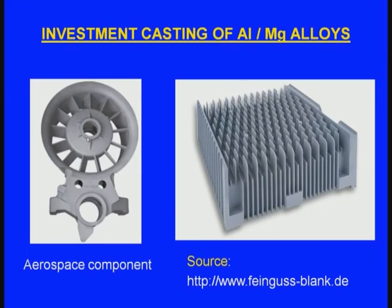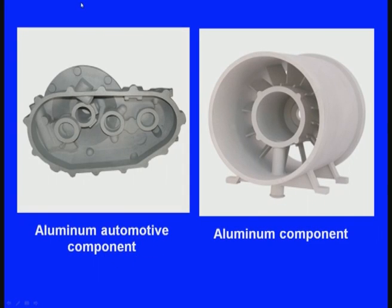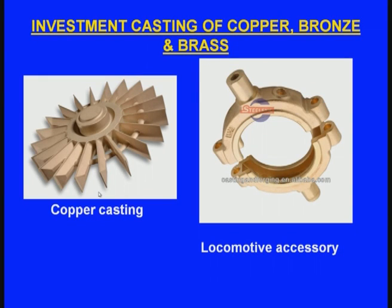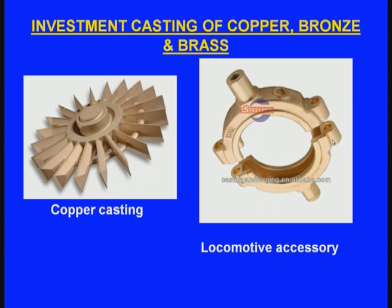Let us see the investment casting of aluminum and magnesium alloys. Aerospace components are produced by the investment casting process — here we can see components with several thin fins requiring very good surface finish, very thin and complex features. An aluminum automotive component is also produced by investment casting process. For copper, bronze and brass investment casting, shown here is a copper casting with thin blades and a locomotive accessory — all produced by the investment casting process.